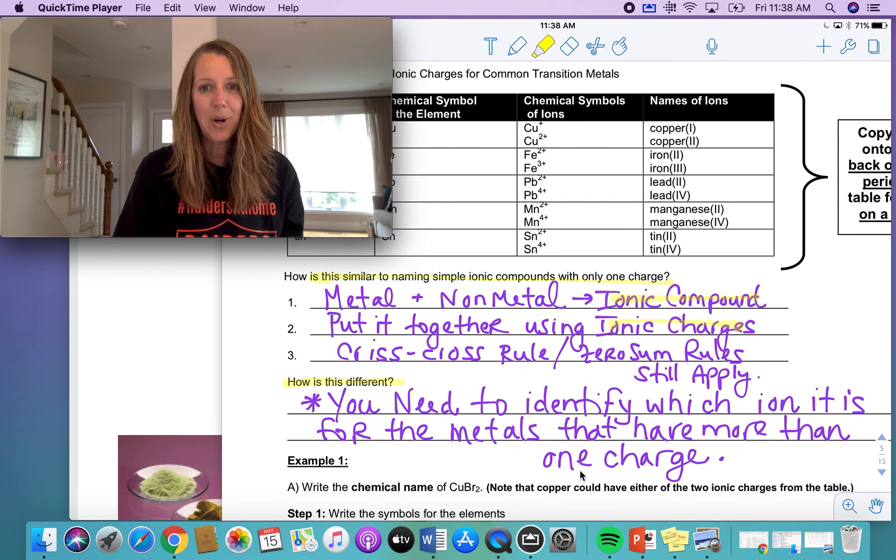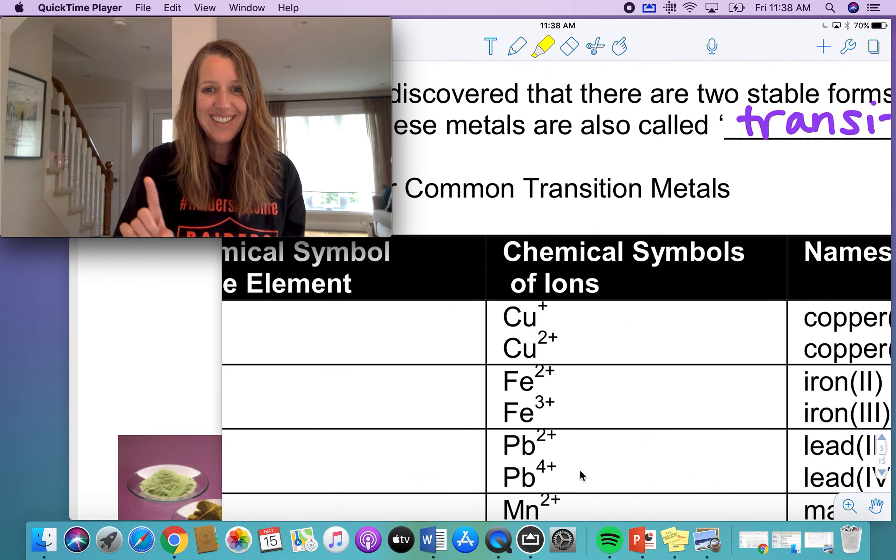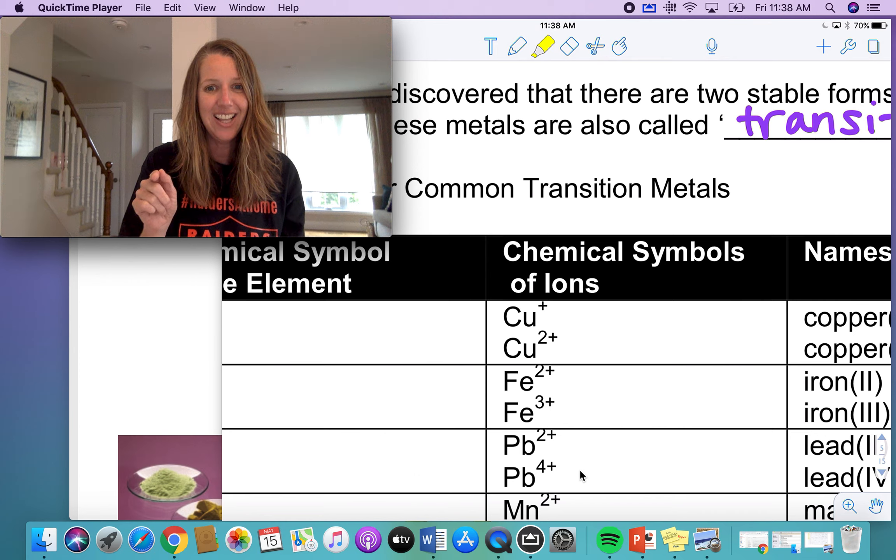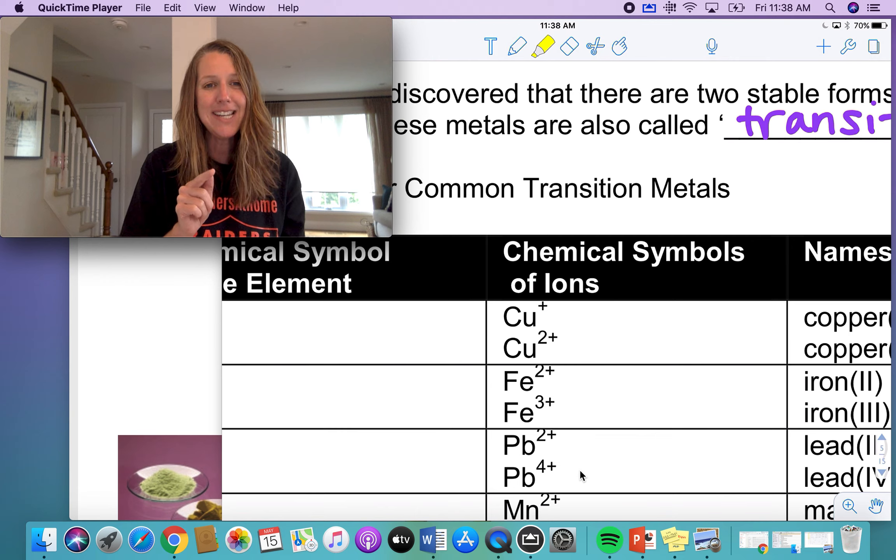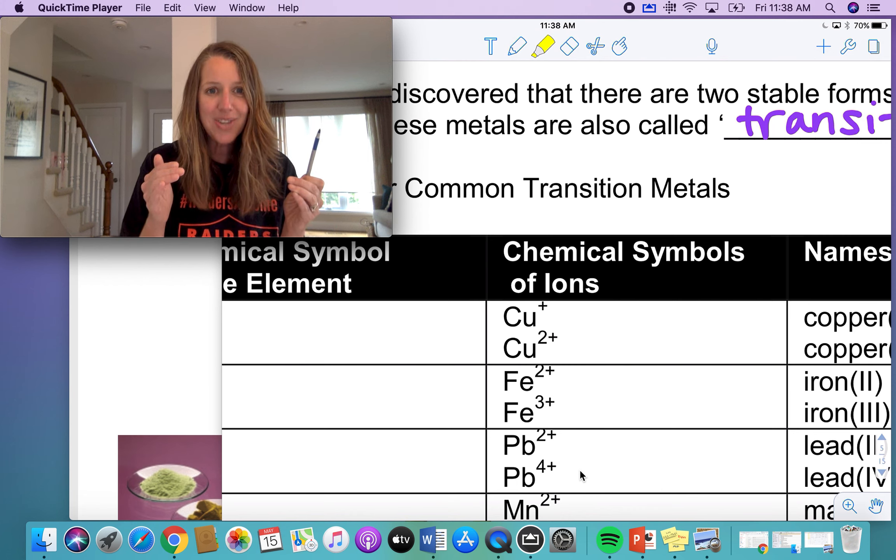So could you have copper one and use copper and chlorine together? Yes. Then it would be CuCl. Could you have copper two coming together with chlorine? Yeah, but then it's going to be CuCl2. Now I can do that math in my head because it's fairly easy for me. Did you get that though? Can you make those ionic compounds?